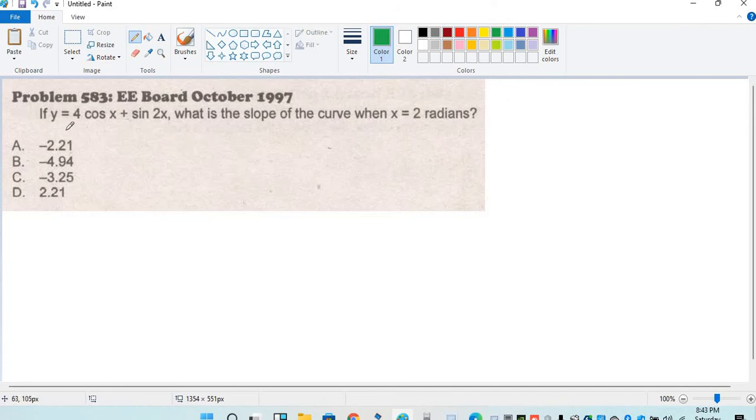Next problem. If y is equal to 4 cos x plus sin 2x, what is the slope of the curve when x is equal to 2 radians?